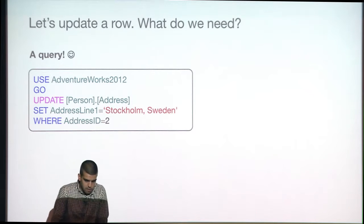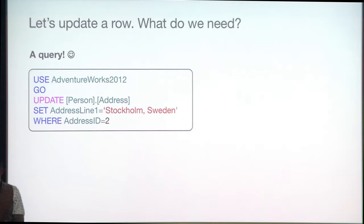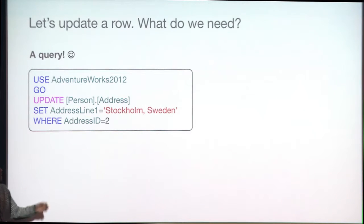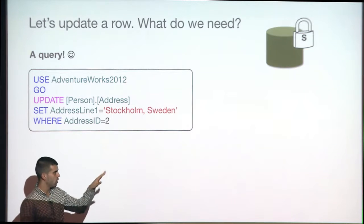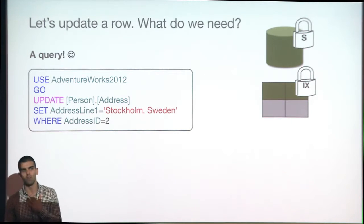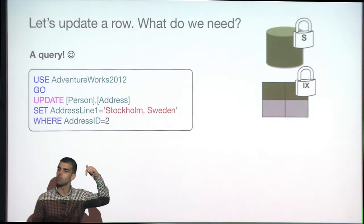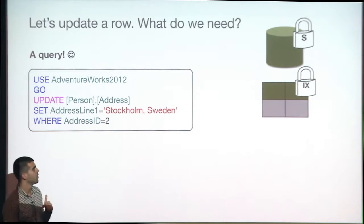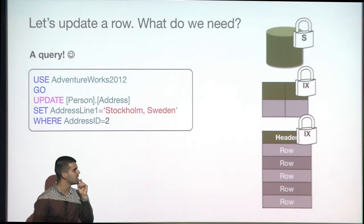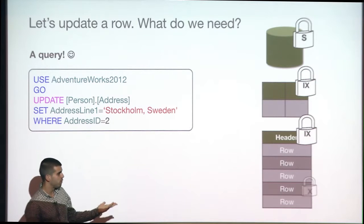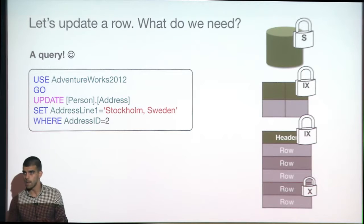Say we love Sweden so much we decide to move here. How does that look inside the system? First, we place a shared lock at the database level. Then we place intent exclusive at the table level — meaning 'somewhere below in the hierarchy, I plan to place an exclusive lock.' At the page level, intent exclusive again for the same reason. And at the row level itself, we place the exclusive lock.